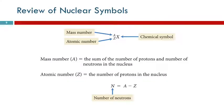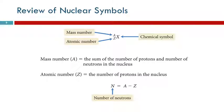Let's review nuclear symbols. You have the element symbol, and on the upper left, the mass number. The mass number is the number of protons plus the number of neutrons. On the lower left, you have the atomic number — the number of protons. If you need to find how many neutrons there are, you subtract: A minus Z gives you the number of neutrons.